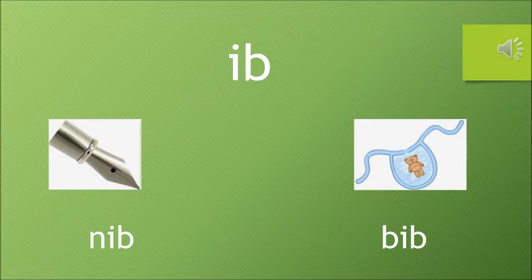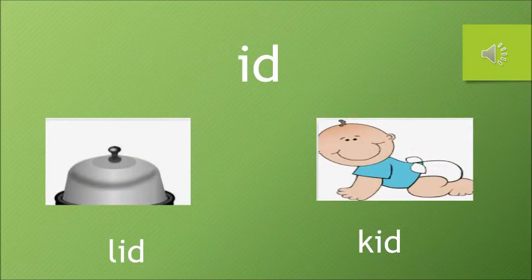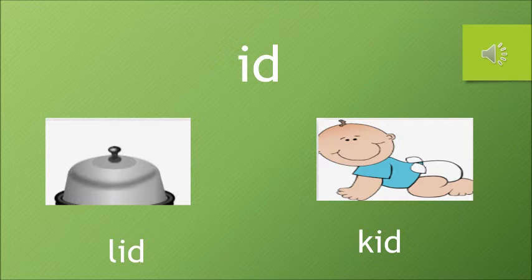And the words are Nib and Bib. Next I word — the sound of I is E and the sound of D is D, so the words are Lid and Kid. Lid is a cover and kid is a small baby.